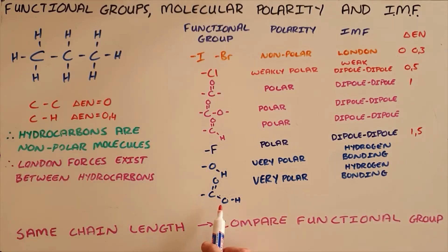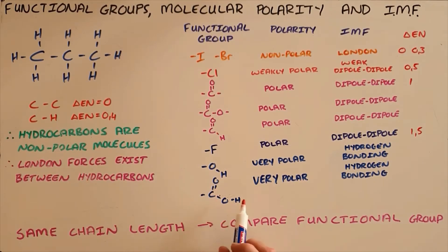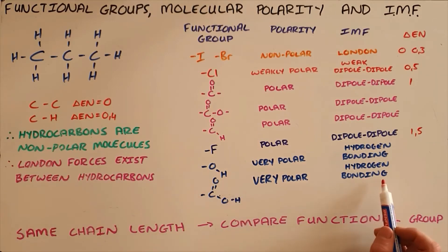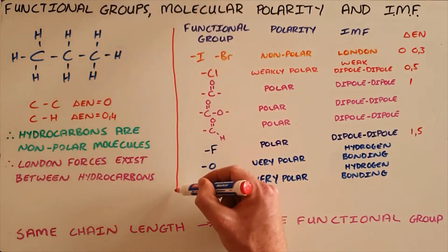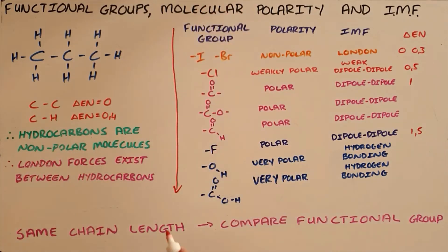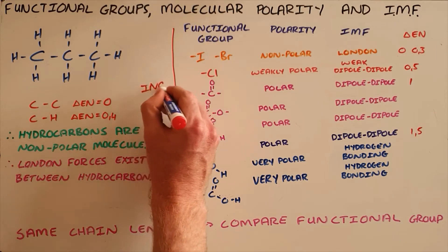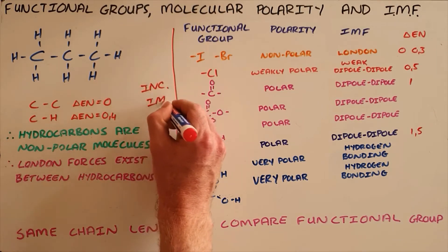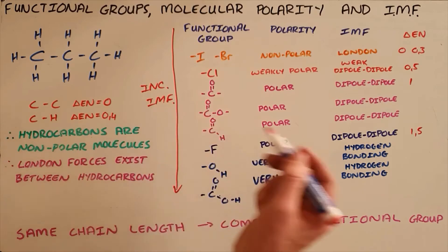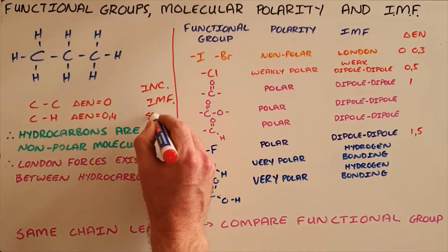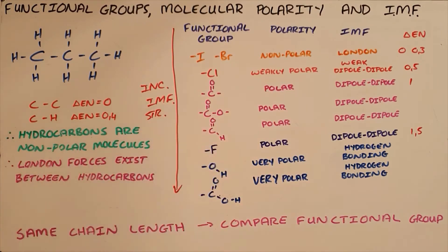Finally, we have the carboxyl group of carboxylic acids, which is the carbonyl group combined with the hydroxyl group. This makes it even more polar than the hydroxyl group alone, making these hydrogen bonding forces the strongest. As we can see in this table, the functional groups are arranged in order of increasing intermolecular force strength. Substances with functional groups lower down on this table have stronger intermolecular forces, and as a result their physical properties would be affected.